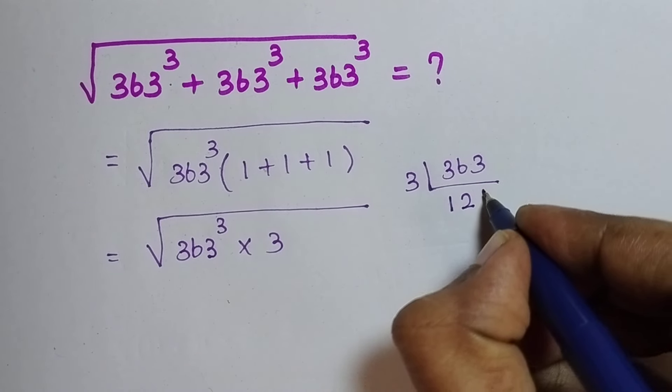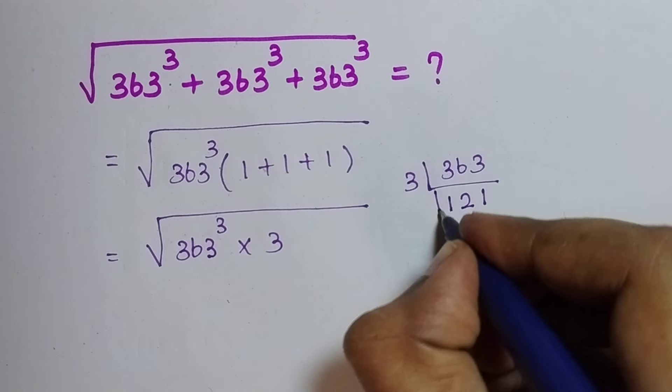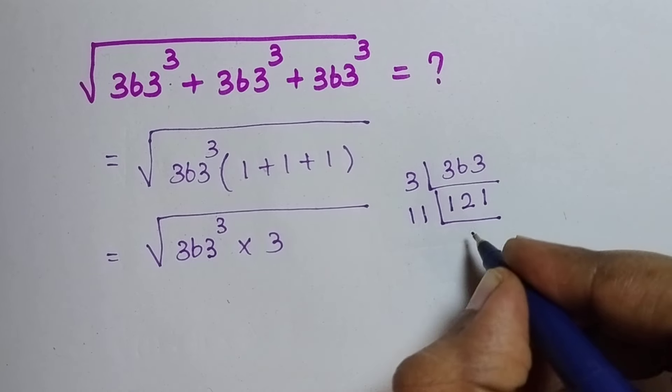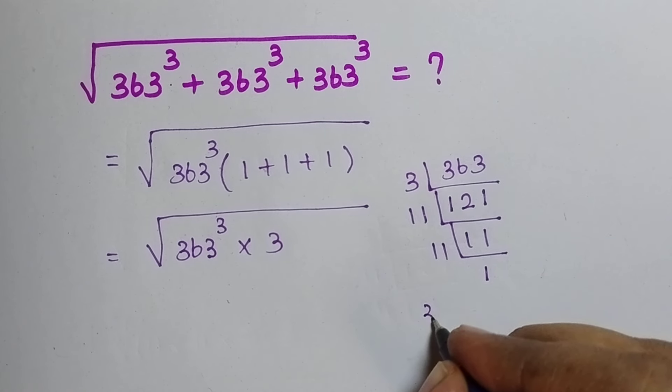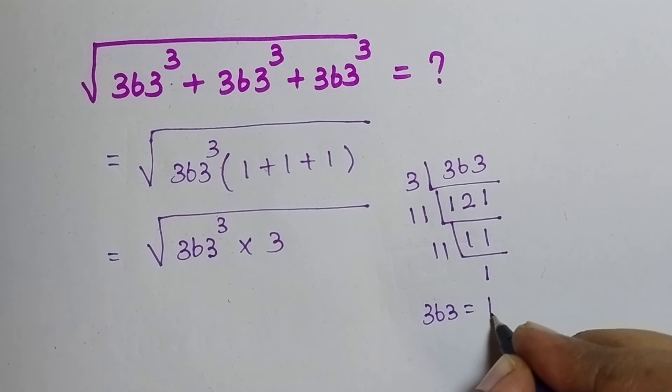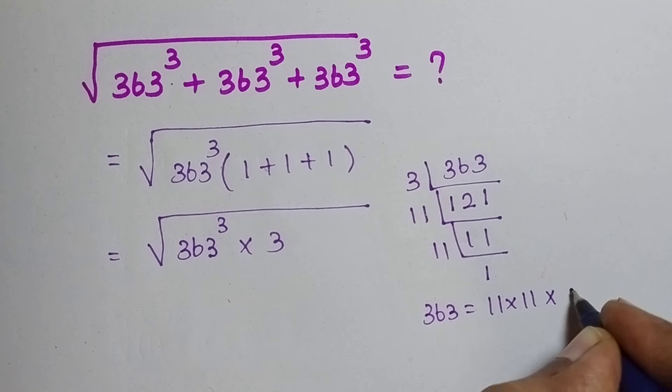So, 1, 3 is 3, 2, 3 is 6, 1, 3 is 3. Then, 11 table, 11 times. Then, 11, 1. So, 363 is equal to 11 into 11 into 3.